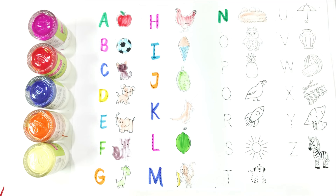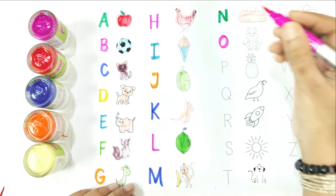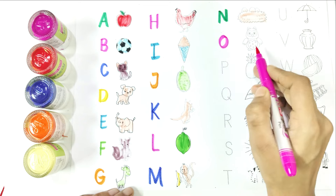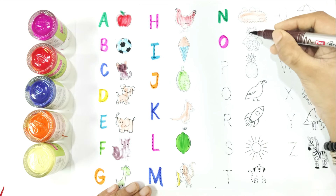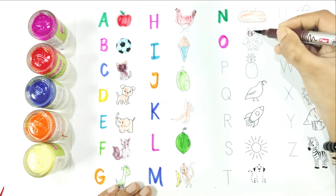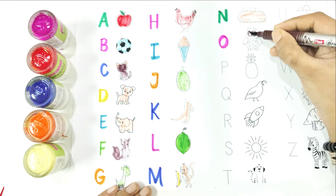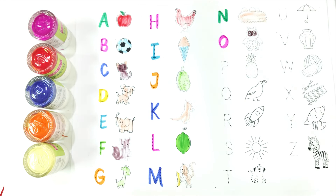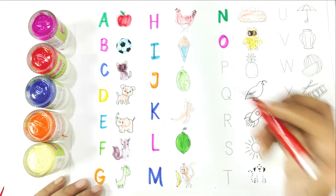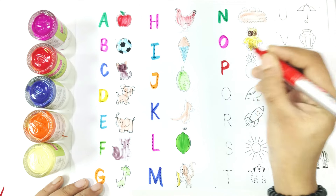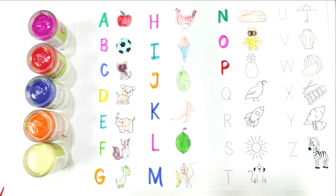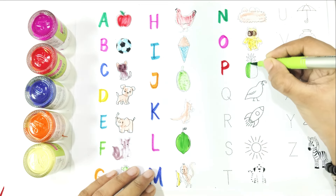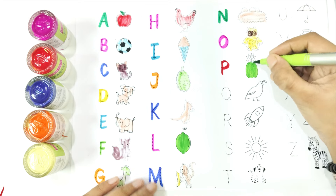Write with me. O — O is for owl. Again, say with me: O is for owl. Write with me. P — P is for pineapple. Again, say with me: P is for pineapple.